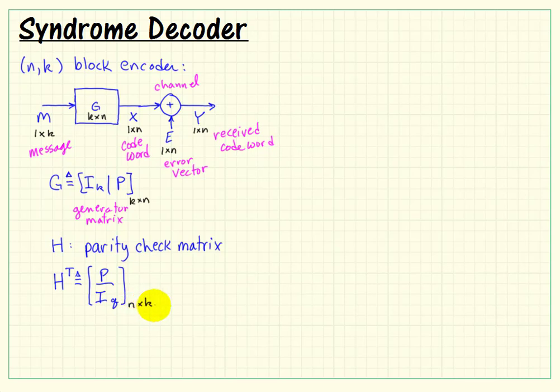So overall, the H transpose matrix is N by Q. Let's make sure we get that correct.